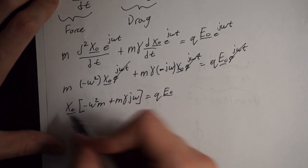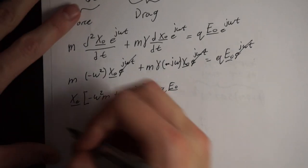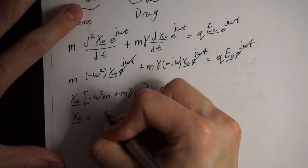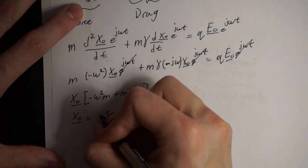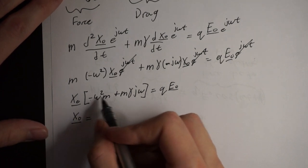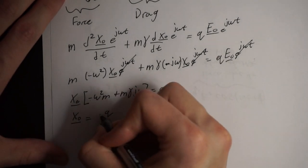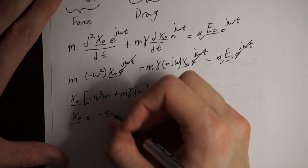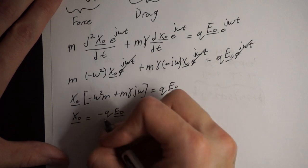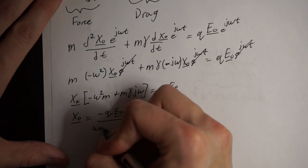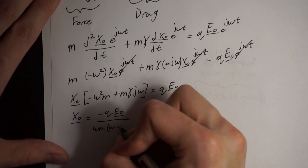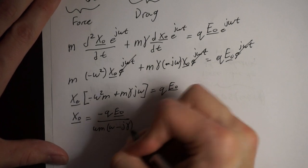Displacement times (−ω²m + mγjω) equals q·E-naught phasor. Isolating for displacement, we get x-naught equal to negative E-naught over ωm times (ω − jγ).